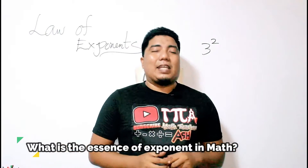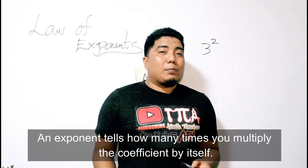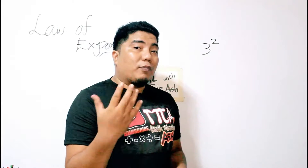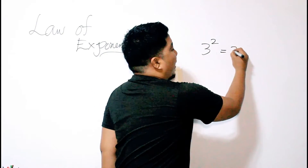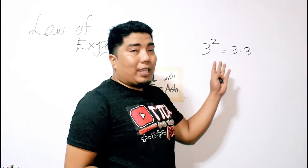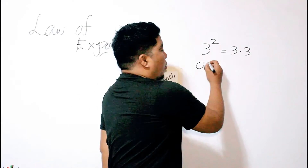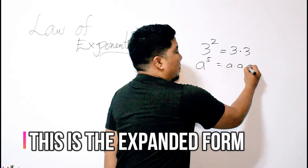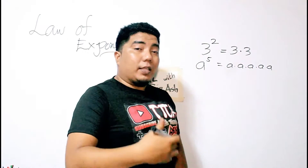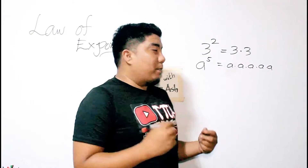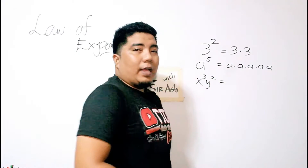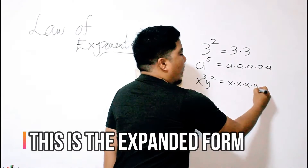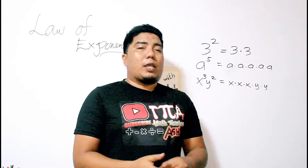How does the exponent signify in mathematics? Exponents tell you how many times you will multiply the given number to itself. For example, 3 to the power of 2, or 3 squared, means you multiply it 2 times to itself. If you have a variable like a to the power of 5, it means you multiply a 5 times to itself: a × a × a × a × a. If you have 2 different variables like x cubed y squared, you multiply x 3 times and y twice to itself.